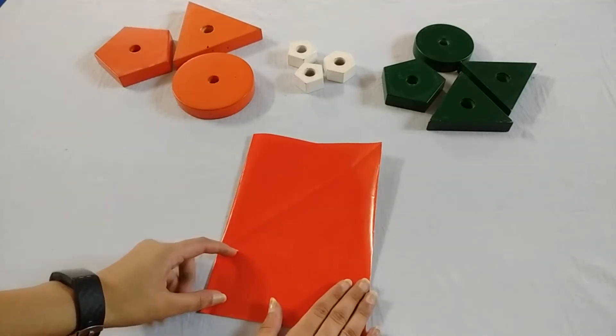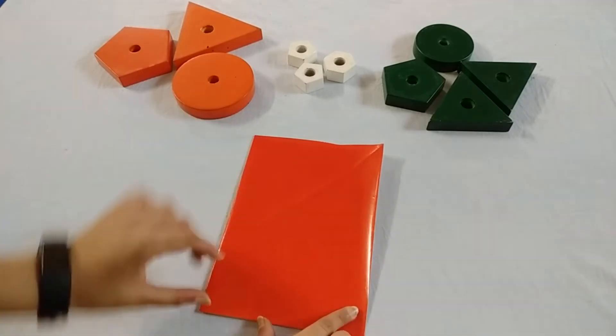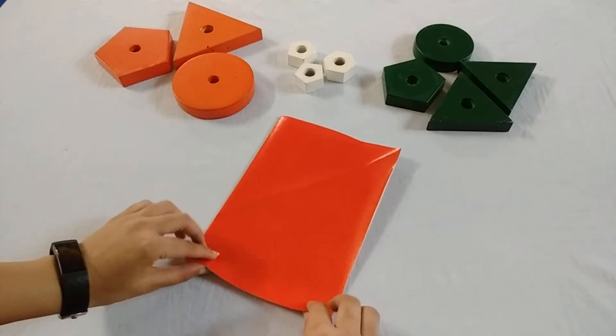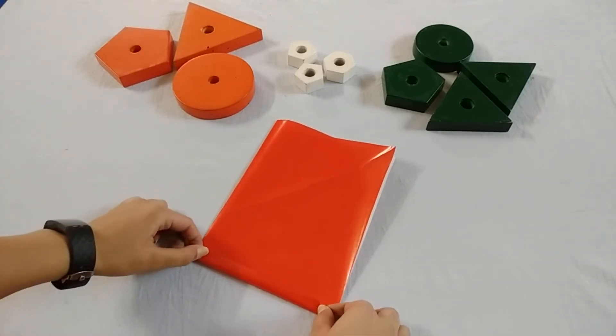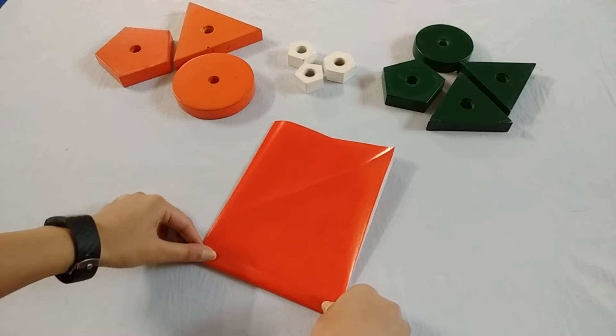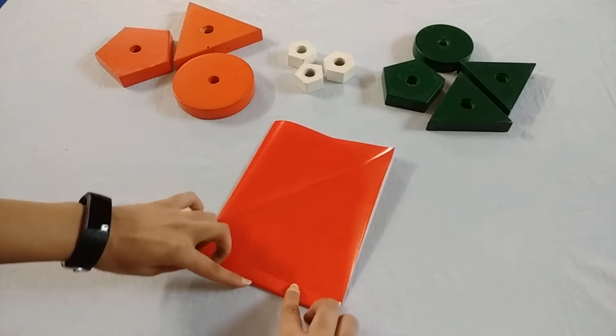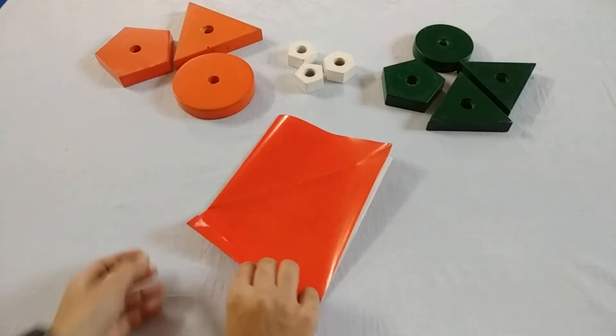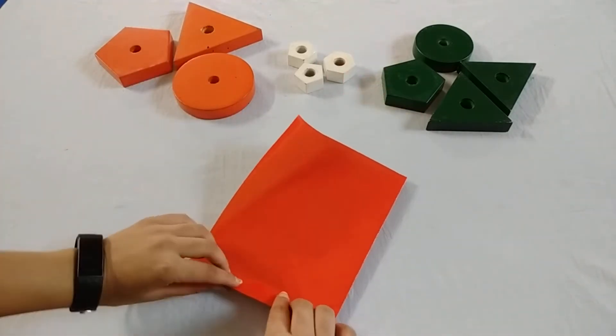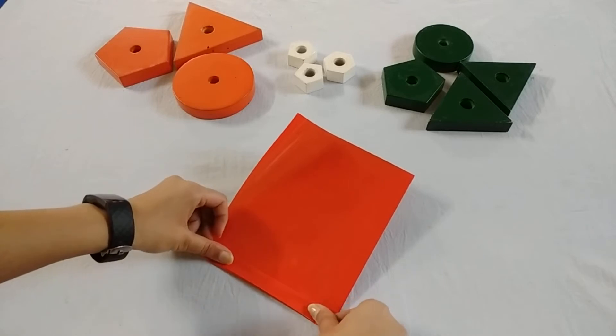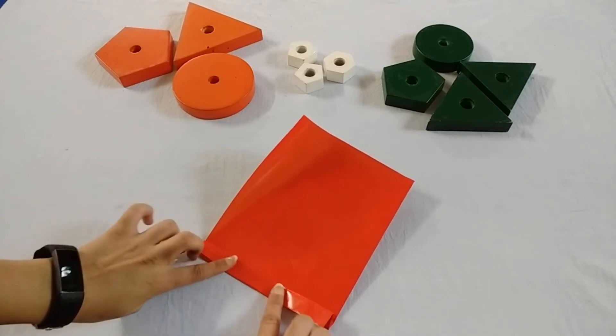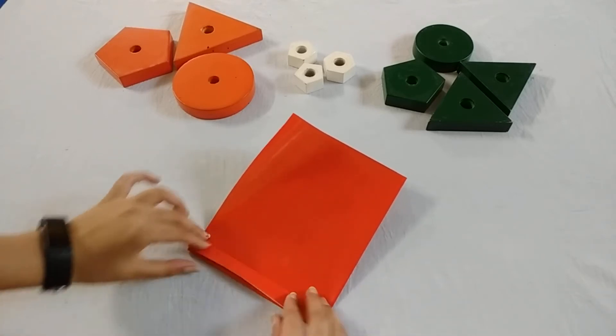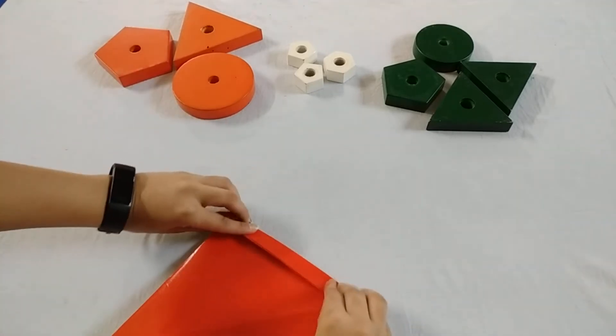Now, put your sheet like this and fold a little like this and make a crease. Again, turn your sheet and do it same on other side like this and make a crease. And repeat this process.